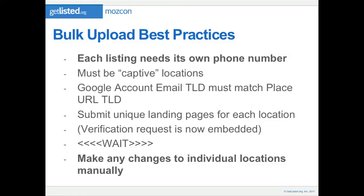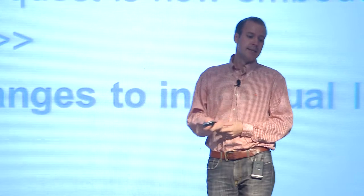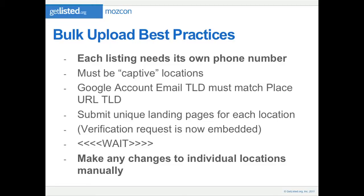For bulk upload verification best practices: number one, each listing has to have its own phone number. Google does not want call center numbers in their Places index — they've got to be captive locations. So if you're a distributor trying to claim listings for a bunch of resellers, that's probably not going to work unless they only sell your products. Your Google account email top-level domain is a big one: it's got to be something at domain-name.com as your Google account, and that has to match the domain name you're listing for each place page.